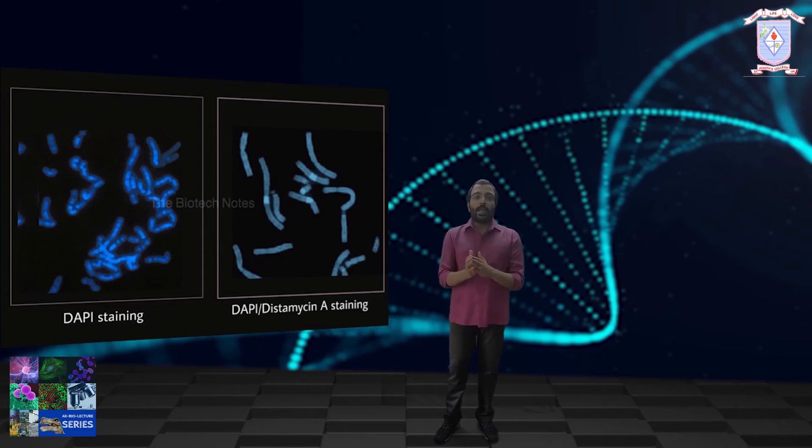Together, DAPI and Distamycin A fluoresce certain AT-rich areas of the constitutive heterochromatin in the C-band regions of chromosomes 1, 9, and 16, and the distal Y-arm (Yq) and the short arm of chromosome 15.